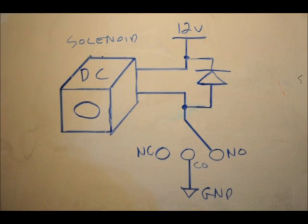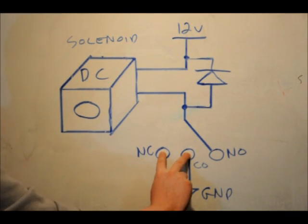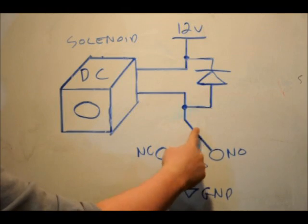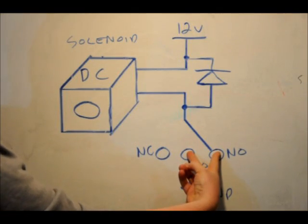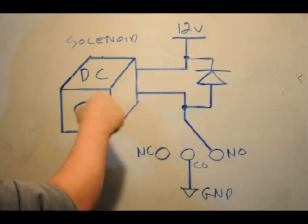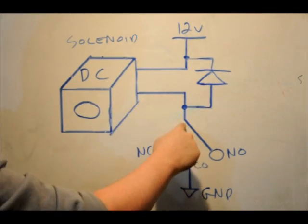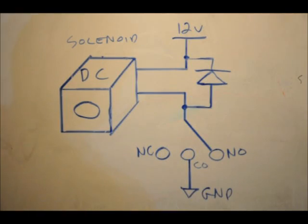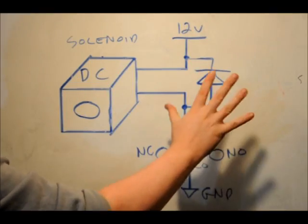So by default, when the relays are off, these two pins, the common and the NC pin, are connected internally. When the relay is turned on, the common pin disconnects from the normally closed pin and connects over to the normally open pin. So what we've got here is essentially 12 volts fed through the solenoid base, which is just a coil of wire, through to the NO pin. So basically, we don't have a circuit here yet.